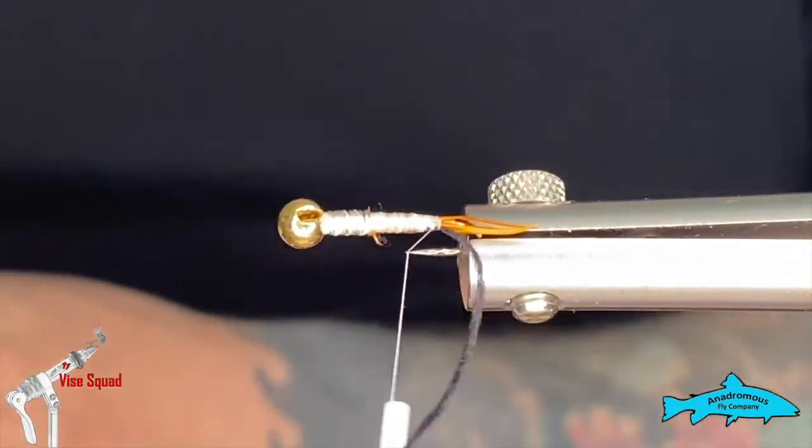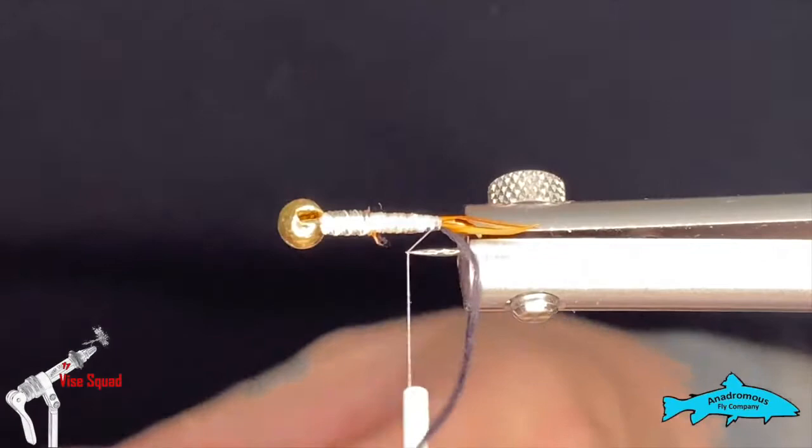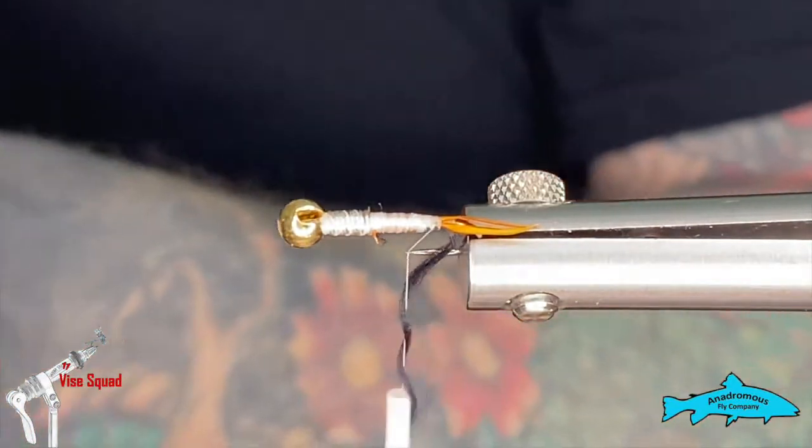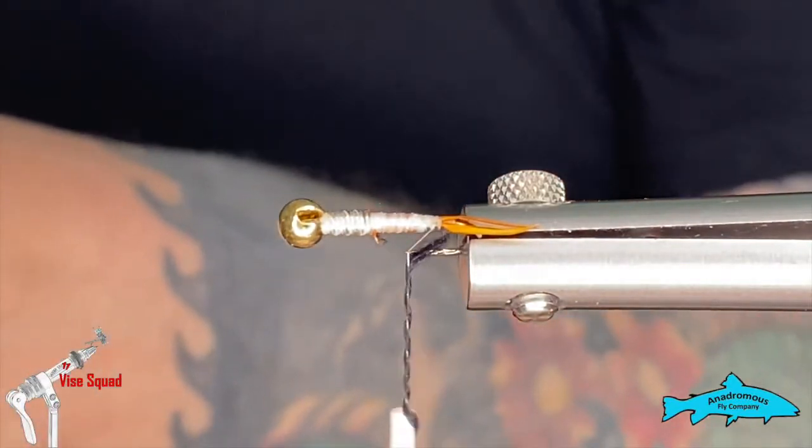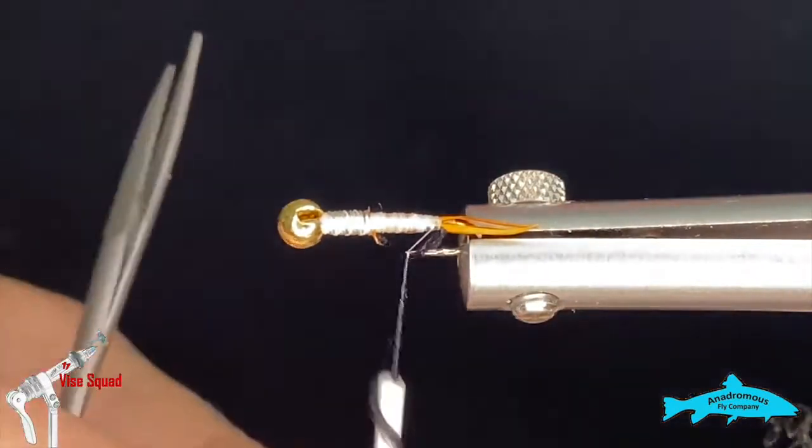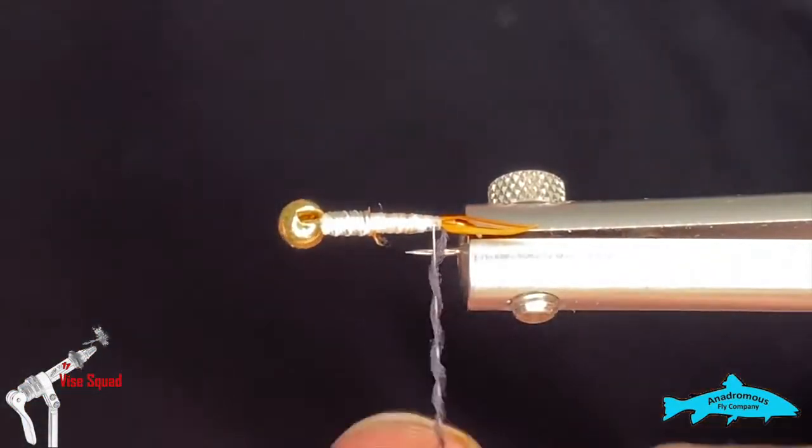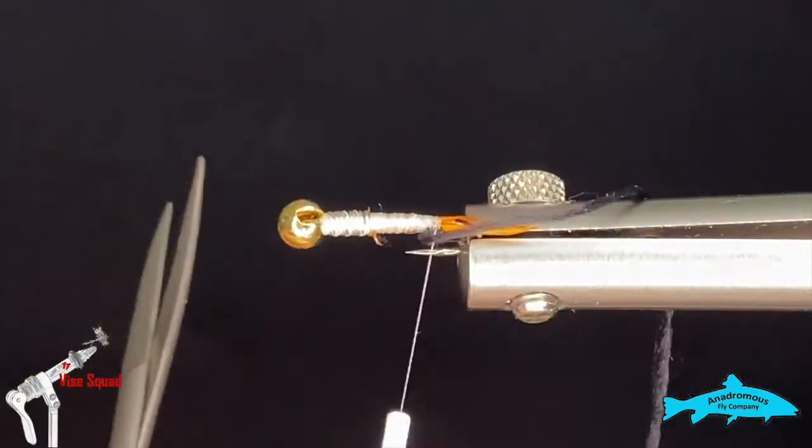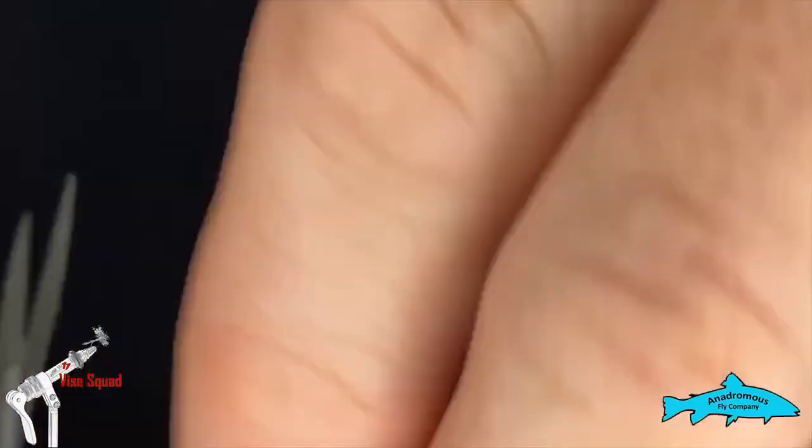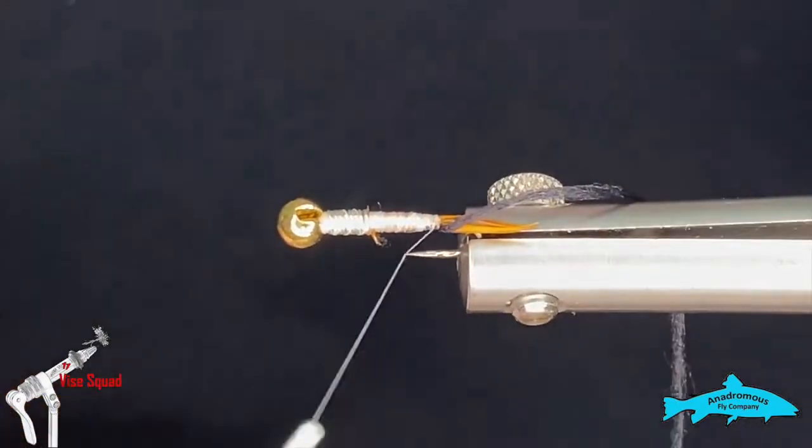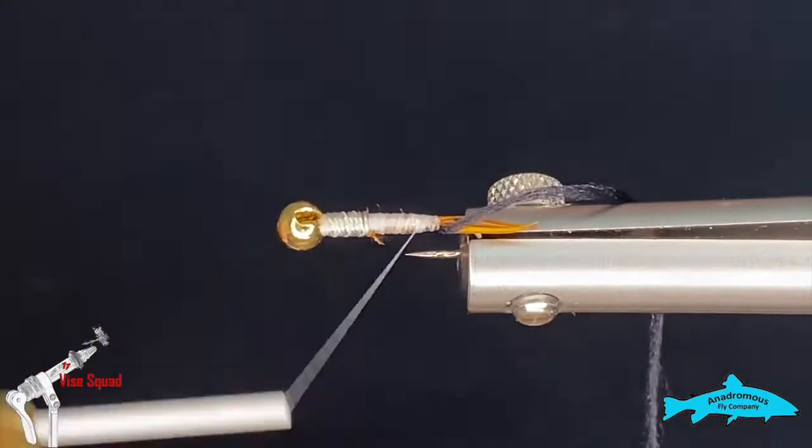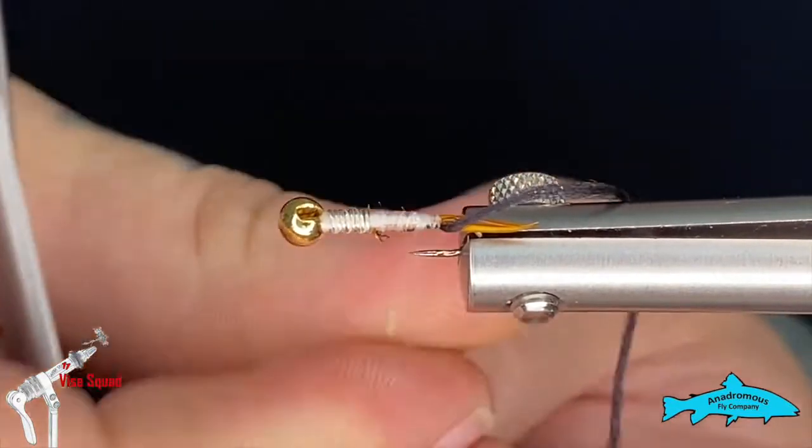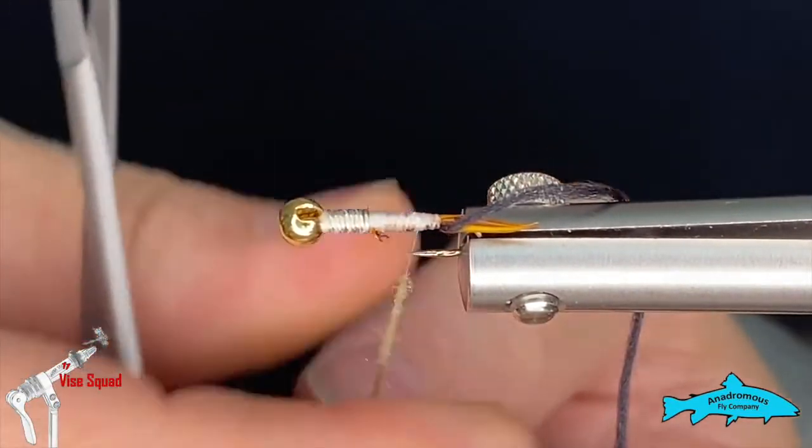Set that aside. Now we're going to grab our dubbing and this dubbing is Sparkle Antron by Wapsi and the color is Hexagenia, which is definitely different than a stonefly should be, but this is a pretty close color for the golden stones. So that's what we're going to go with here. I'll just get this uni stretch untwisted here. I'll grab our dubbing and I'll just do a nice fine noodle on there. You don't want to be too big and bulky especially in the back end here.